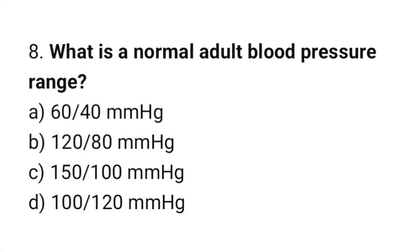Question number 8: What is the normal adult blood pressure range? The correct answer is B: 120 over 80 mmHg.